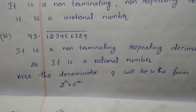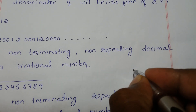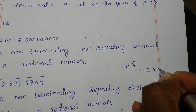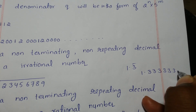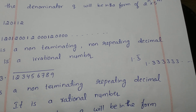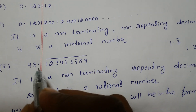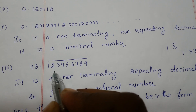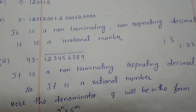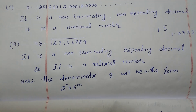Bar means repeating decimal. For example, 1.3 bar means 3 is repeating continuously. So for 43.123456789 bar, the repeating decimal is 1 2 3 4 5 6 7 8 9 — it will repeat continuously. Therefore, it is a non-terminating repeating decimal, and so it is a rational number.